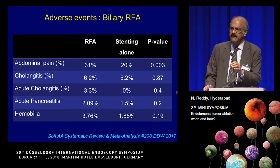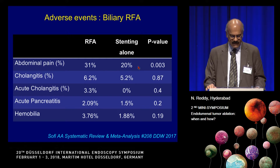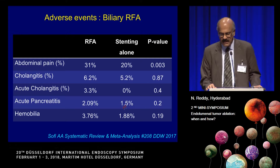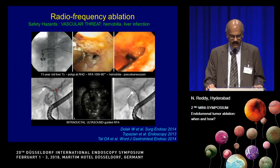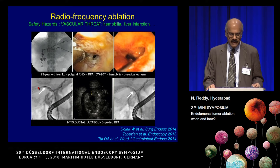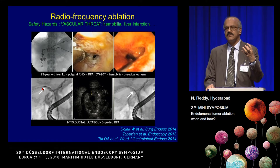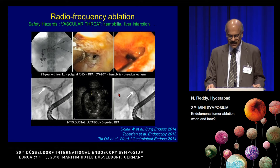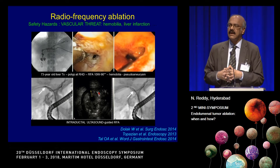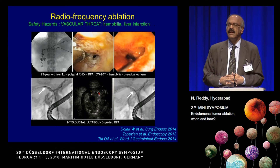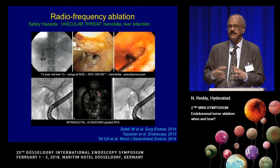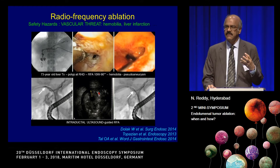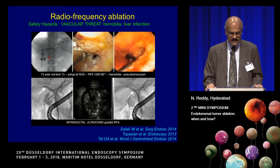One advantage of RFA is that adverse reactions are not many. Some patients develop transient abdominal pain. There have been reports of cholangitis and occasional acute pancreatitis, but the most dreaded complication is hemobilia. This is seen especially when there is a right hepatic duct tumor, where the right hepatic artery runs very close to the duct and pseudo-aneurysms can develop, resulting in profuse bleeding. For right hepatic duct tumors — especially right posterior — we like to perform intraductal ultrasound to assess the relationship with the artery before RFA. These pseudo-aneurysms can be managed by embolization.